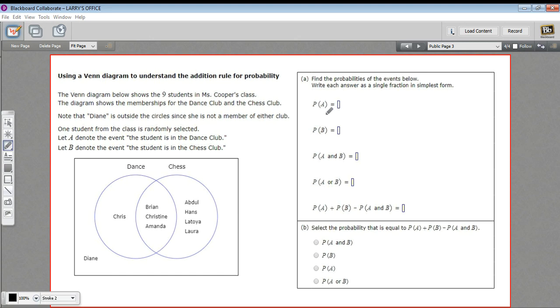So the first part says, what's the probability of A? And A is dance club. So I'm just going to put an A by dance. B is member of chess club. So I'm going to put a B here.